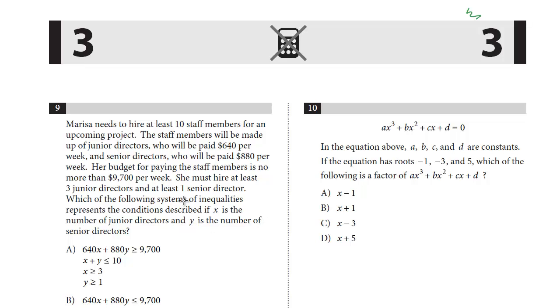So really a bulky question, lots of information. This is a common question type on the new SAT where you set up these inequalities; you don't have to solve it. We know that X is the number of junior directors and Y is the number of senior directors. And one phrase before we solve this problem, I just want to remind you, this we've seen on previous tests.